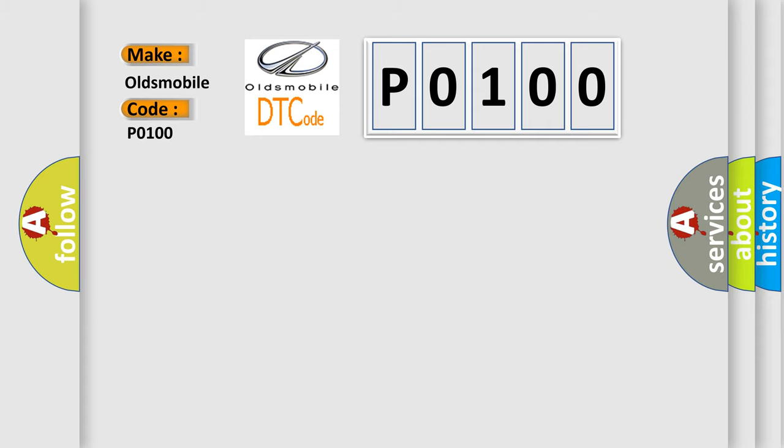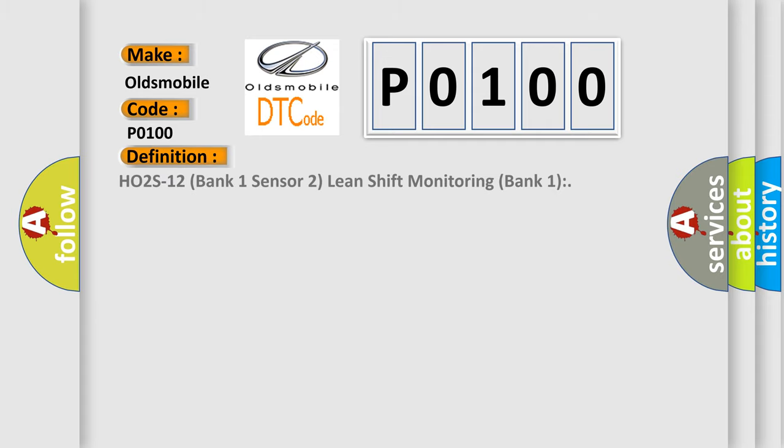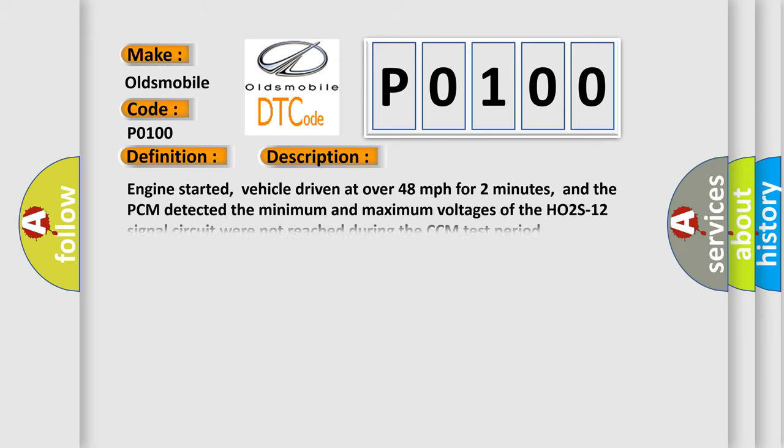The basic definition is: HO2S12 Bank 1 Sensor 2 Lean Shift Monitoring Bank 1. A short description: engine started, vehicle driven at over 48 miles per hour for two minutes, and the PCM detected the minimum and maximum voltages of the HO2S12 signal circuit were not reached during the CCM test period.